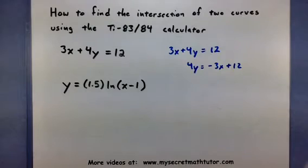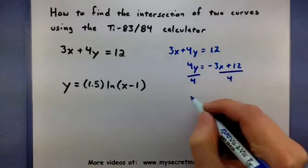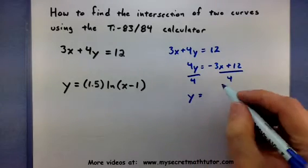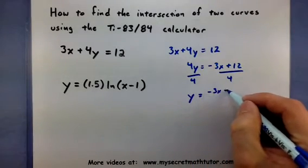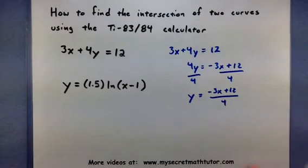And then finally, to get it completely all alone, let's divide everything by 4. So this will give us y is equal to a negative 3x plus 12 all divided by 4.